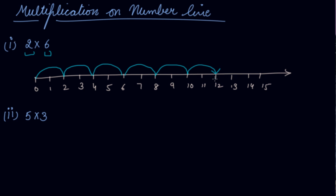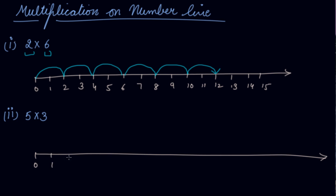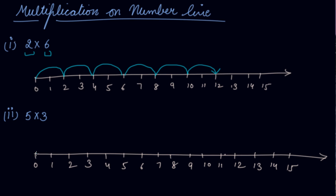This is how you show multiplication on the number line. For 5 into 3, you take a distance of 5 three times. From 0 to 5 is the first jump, 5 to 10 is the second, and 10 to 15 is the third. You are taking 3 jumps with a distance of 5 each. So this is how you represent multiplication on your number line.